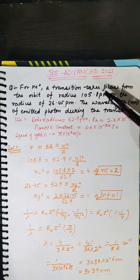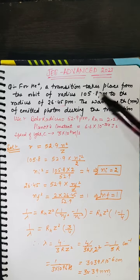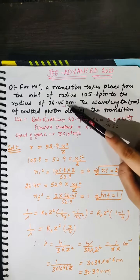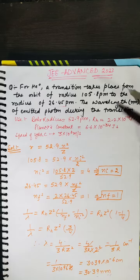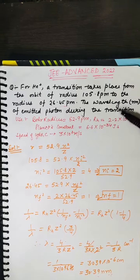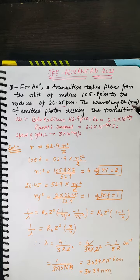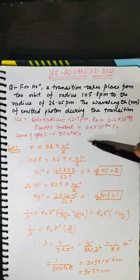For helium positive ion, a transition takes place from an orbit of radius 105.8 picometers to another orbit of radius 26.45 picometers. The wavelength of the emitted photon during the transition needs to be determined, with the unit in nanometers. The constants' values are given here.